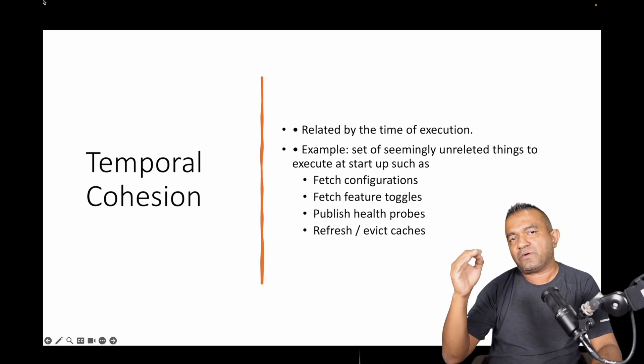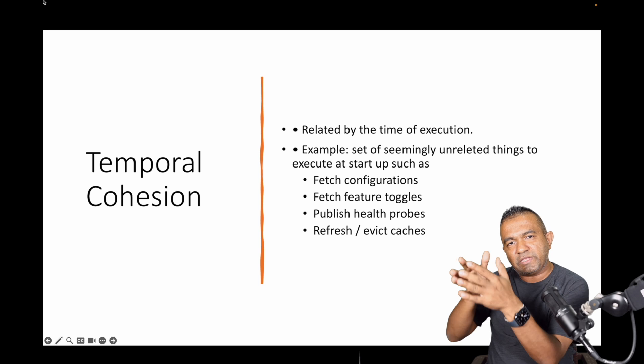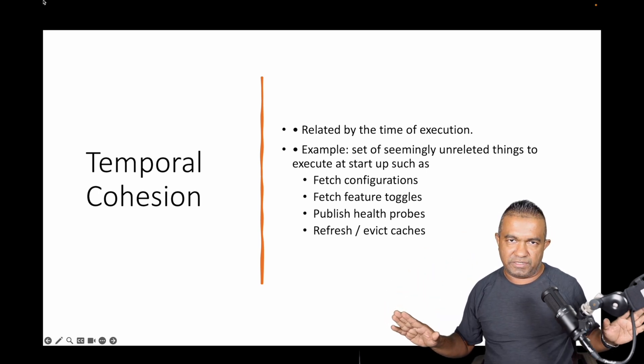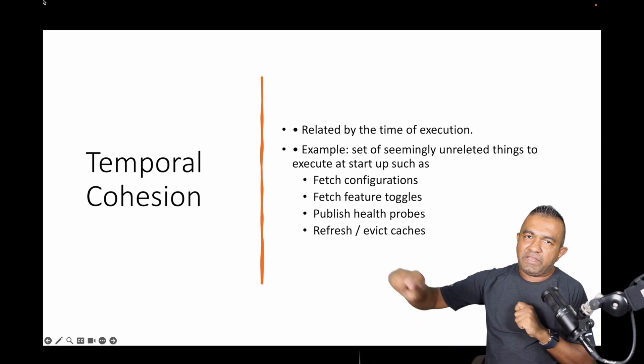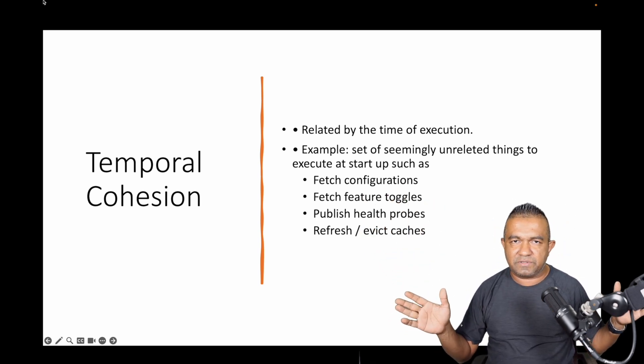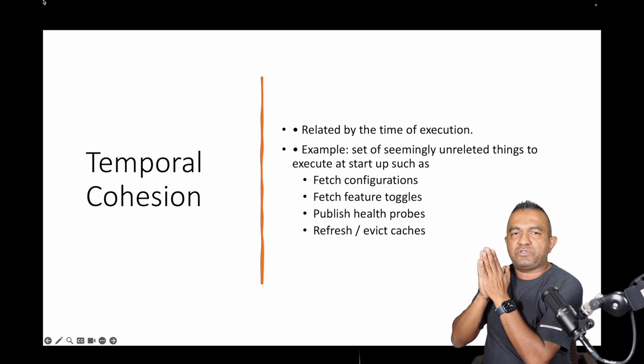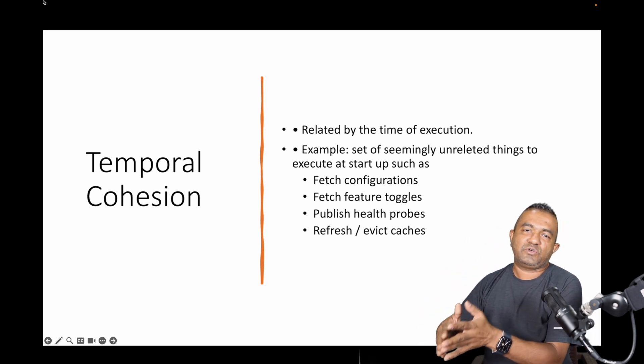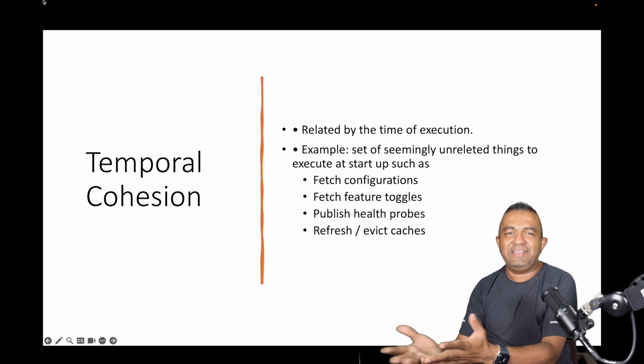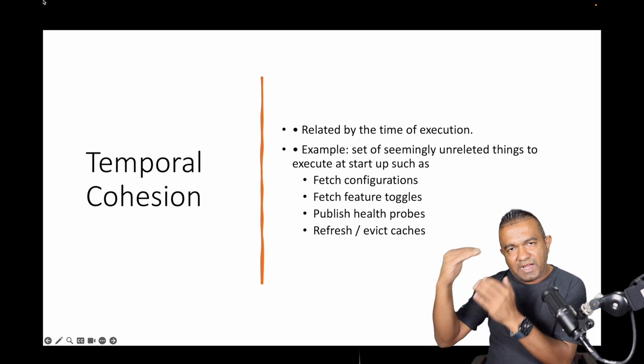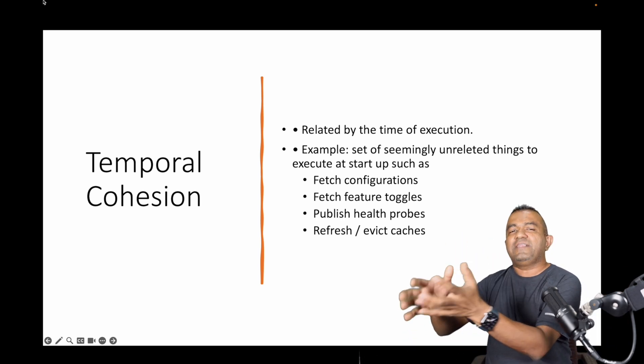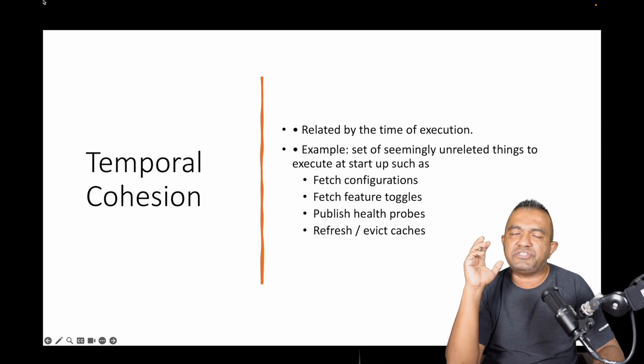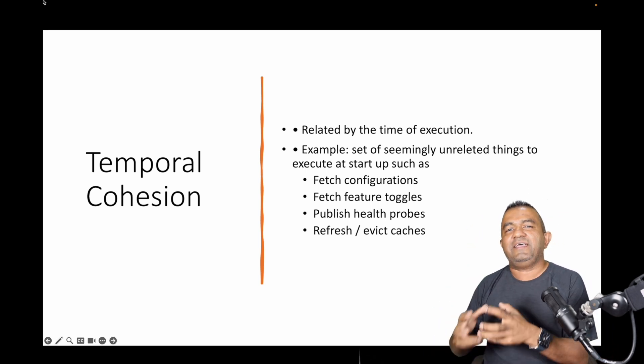Next one is temporal cohesion. Temporal cohesion is bounded with the time of execution. For example, when you start an application you have to do a bunch of work that's not related to each other. You may fetch configurations, then fetch some feature toggles which don't have connection between each other, then publish your health message or health props, then refresh your API caching. These don't have relationships with each other other than the time of execution. That's temporal cohesion.